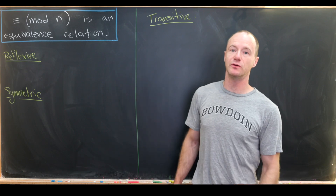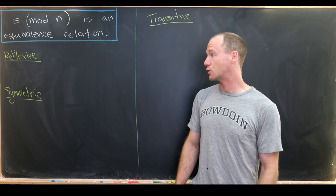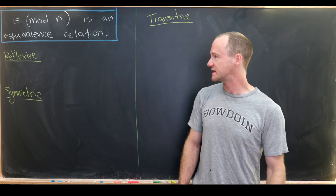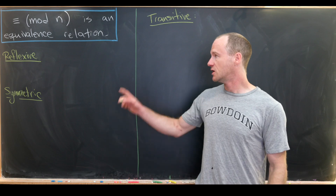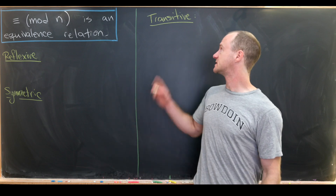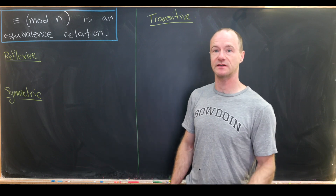Okay so let's first prove that congruence mod n is an equivalence relation. That means there are three things to check: we've got to check that it's reflexive, symmetric, and transitive.